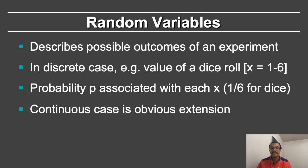Let's first talk about random variables. They describe all the possible outcomes of an experiment. Let's consider a discrete case, example, the value of a dice roll. In this case, the random variable x can have values that range from 1 to 6. There is a probability p associated with each x, which is 1 sixth for the dice.